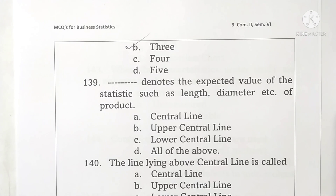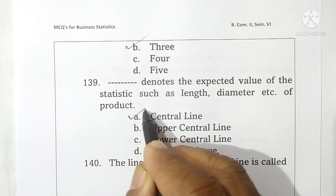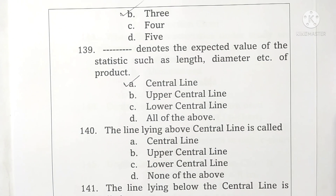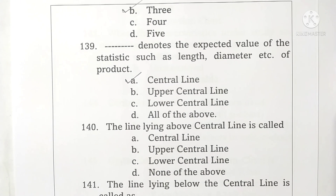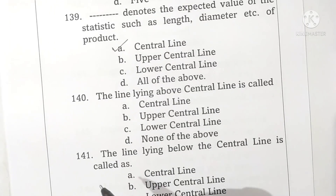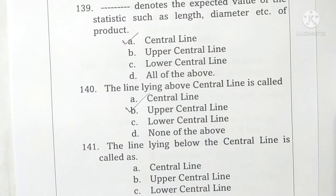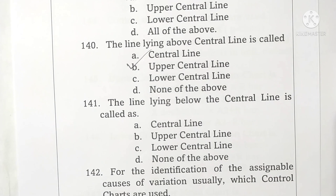Question 139: the line that denotes the expected value of a statistic such as length, diameter, etc. of the product is called the central line. Option A is correct. Question 140: the line lying above the center line is called the upper control line. Option B is correct.